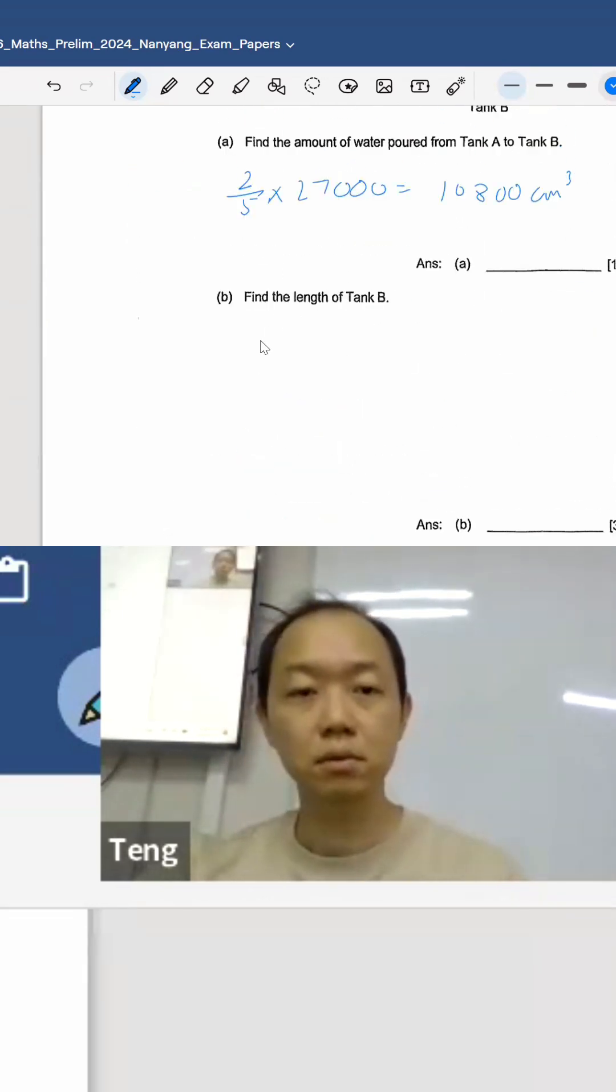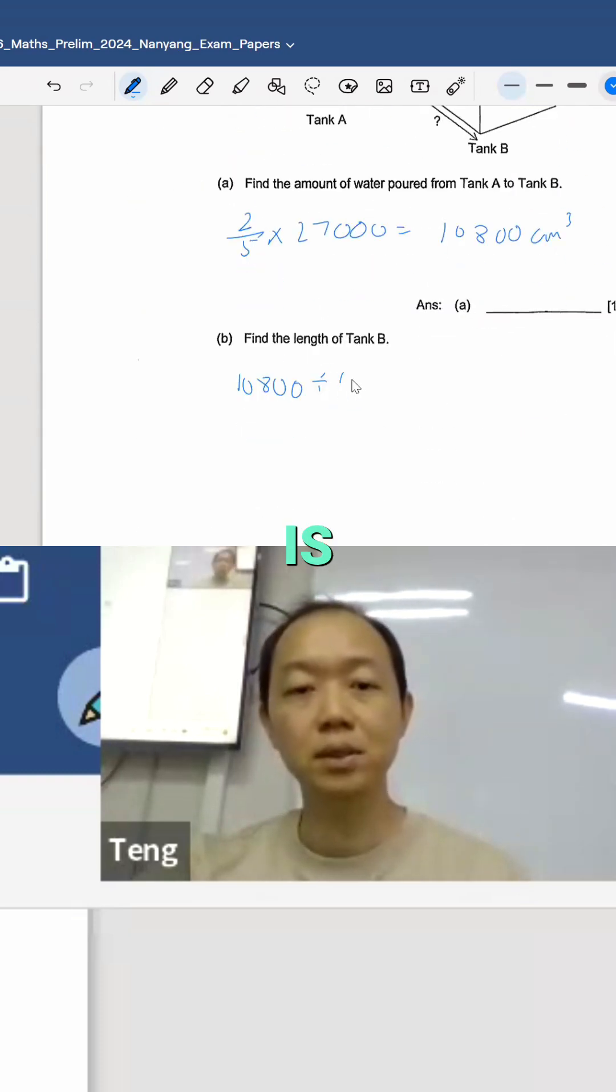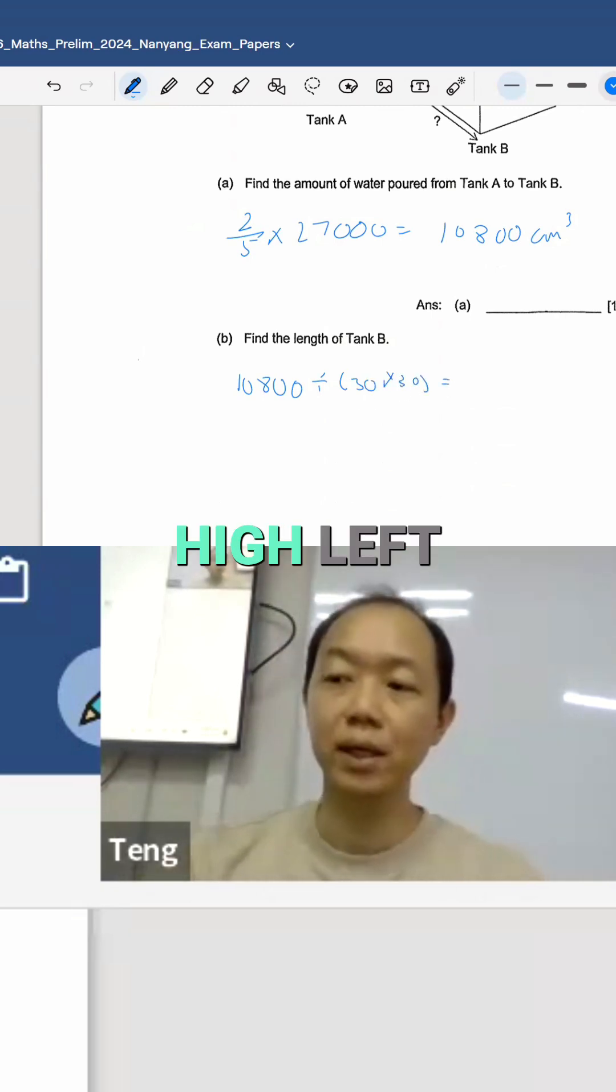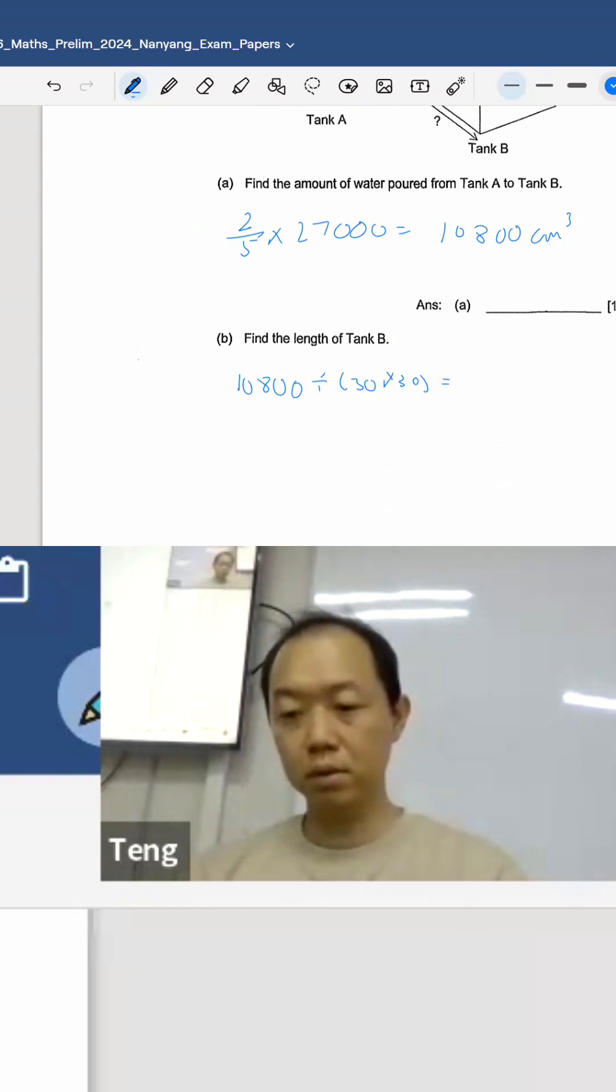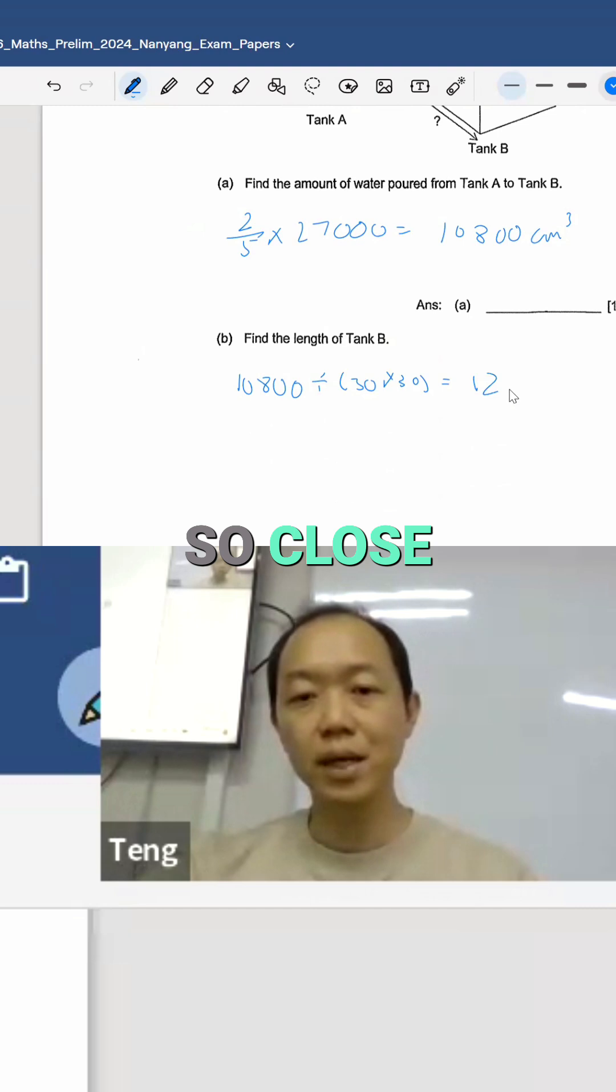You divide 10,800 by the base area, which is 30 times 30. This will give you the height. 12. Sorry, it's the height of water that went over, so 12 cm.